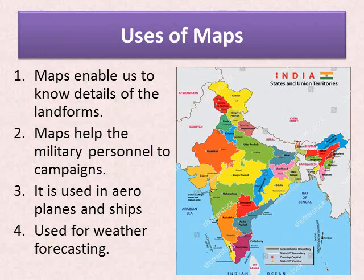Now let us learn about the uses of maps. There are four major uses. First, maps enable us to know the details of landforms. Second, military personnel use maps to plan various campaigns, raids, or attacks. Third, maps are used in aeroplanes and ships for navigation and voyage. Fourth, maps are used for weather forecasting.